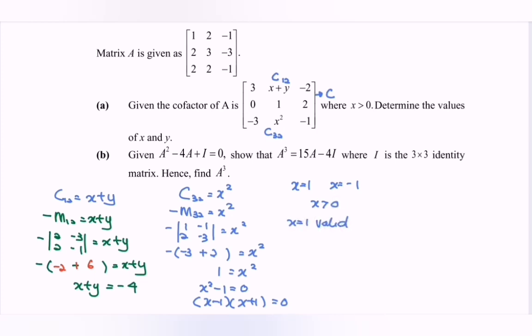When X equals 1, substitute into X plus Y equals negative 4. So Y equals negative 5. Therefore the values are X equals 1 and Y equals negative 5.